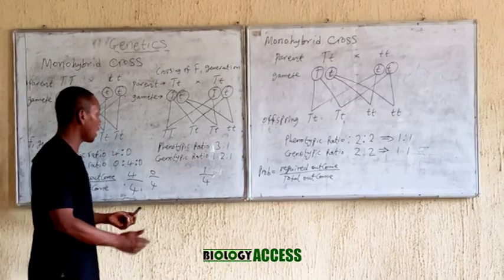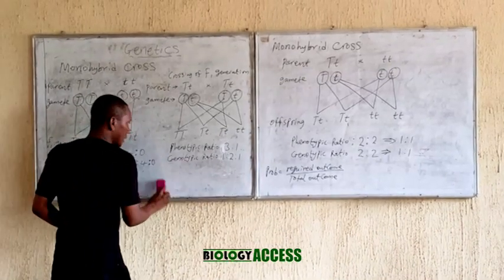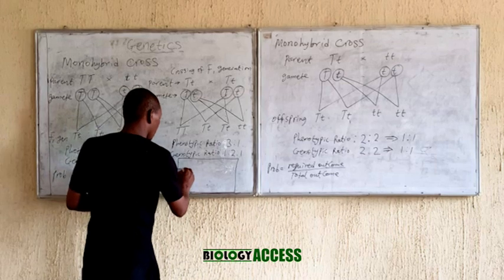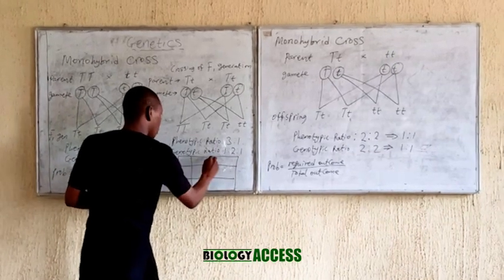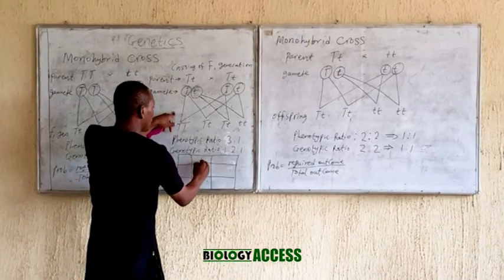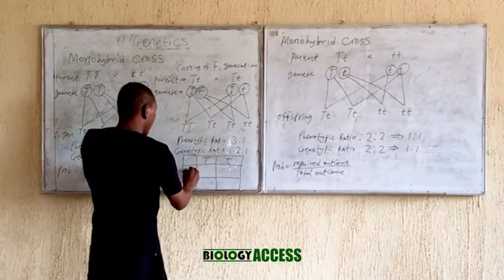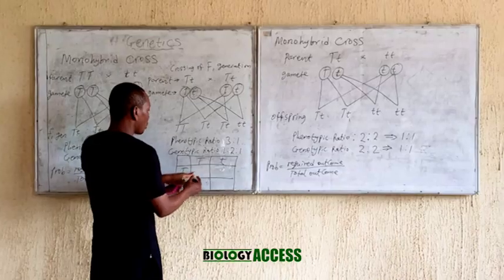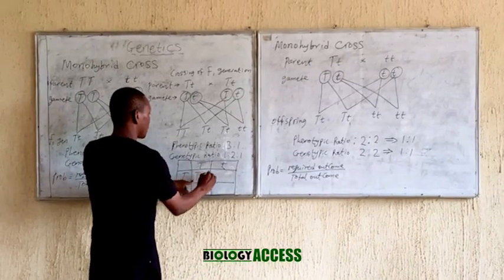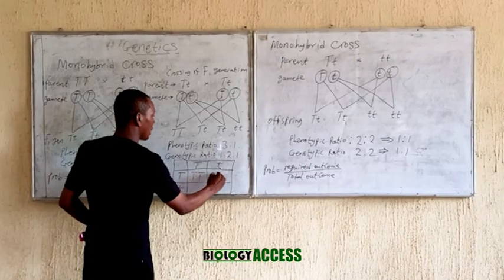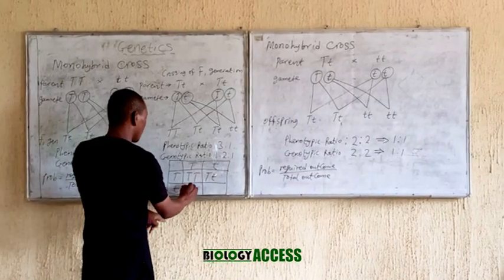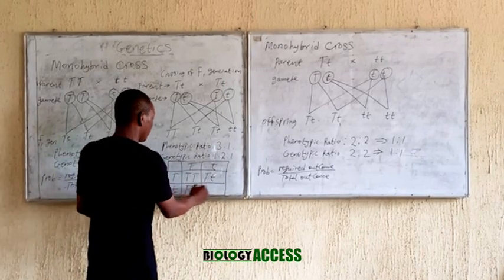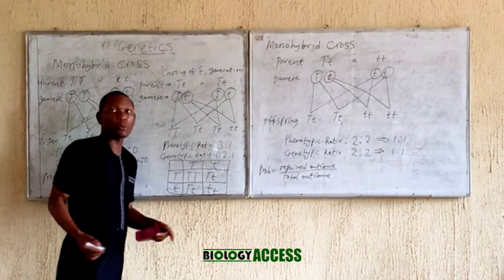This same cross can be done in another format — I'll quickly introduce it. It is a very brief method. You place the gametes along the top and the side of a box. The first gamete connects to the second to give offspring, and you connect each gamete from one parent to each gamete of the other parent to get all four outcomes. This is another way of working out the cross.